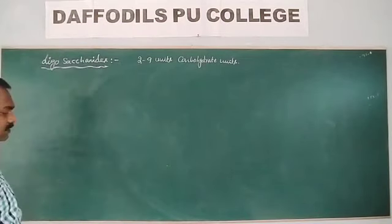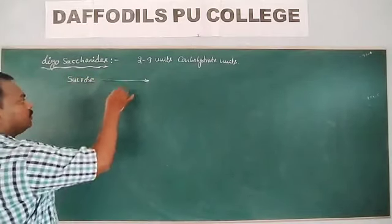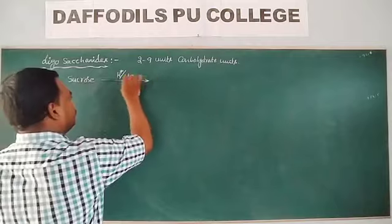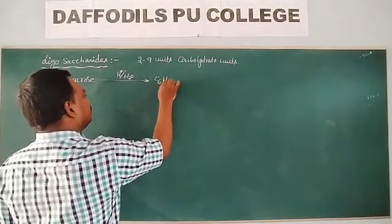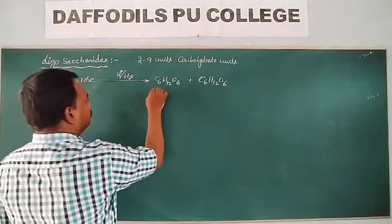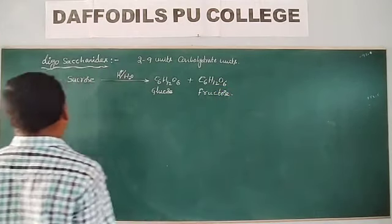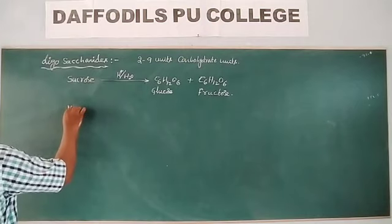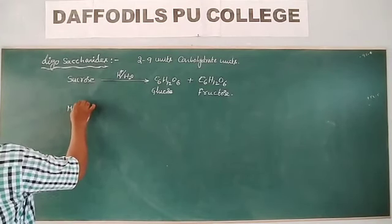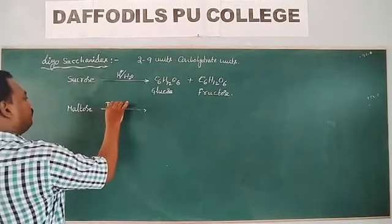Sugar — you can say that it is sucrose. When this sucrose is hydrolysed in presence of water, we will get glucose and fructose. Another monosaccharide example is maltose.